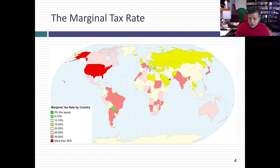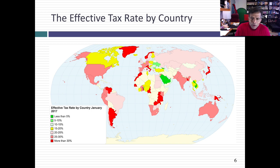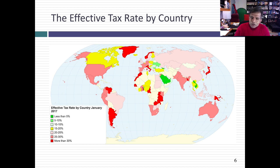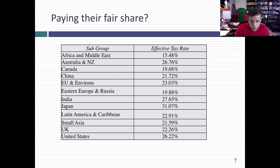Looking at effective tax rates around the world, you get some differences. This is a measure of both what the tax rate is in each country and how good each country is at collecting those taxes. There are parts of the world where the effective tax rate is greater than 30% — Japan, for instance, has an effective tax rate over 30%. U.S. companies collectively pay about 26% to 28% effective taxes, well below 40%. But compared to the rest of the world, that actually puts them higher than much of the world. Only Japan and maybe India have companies paying slightly higher than the U.S.